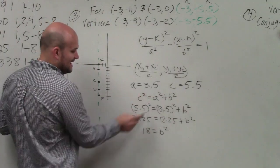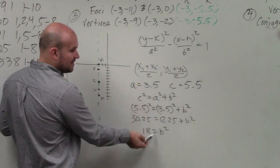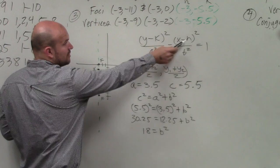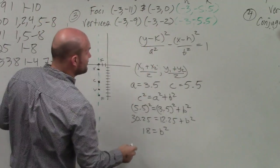So 18 is going to be our b squared. Now we know what a squared is, which is 12.25, and we know what b squared is, and we now know our h and our k. So now I'm just going to plug everything into my formula.